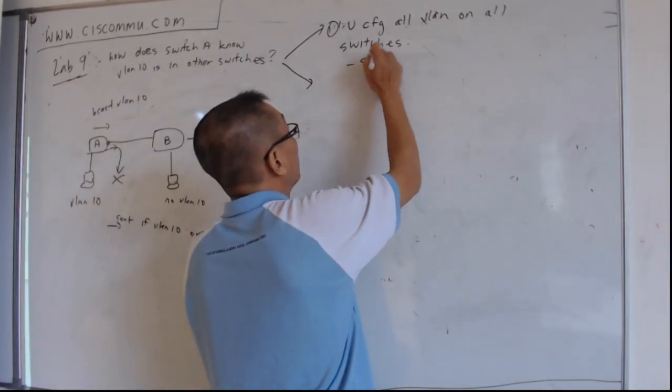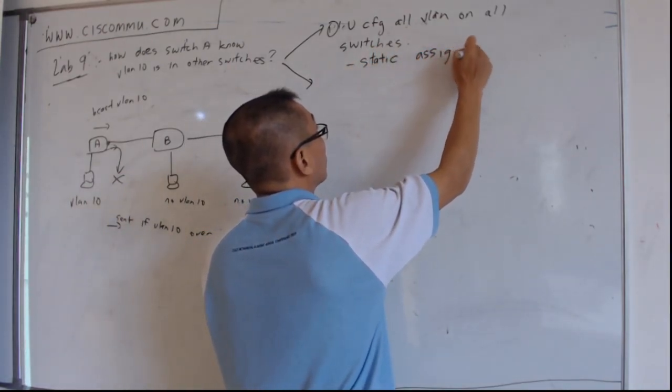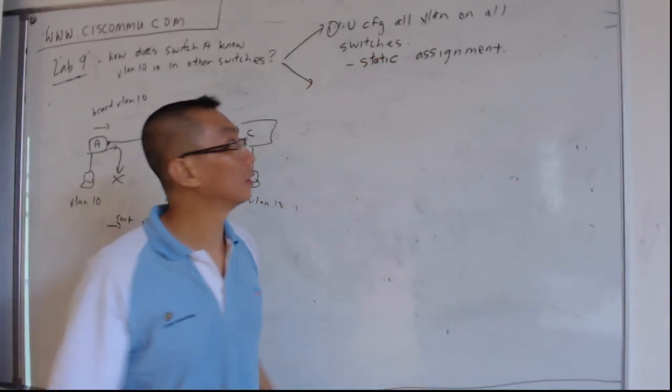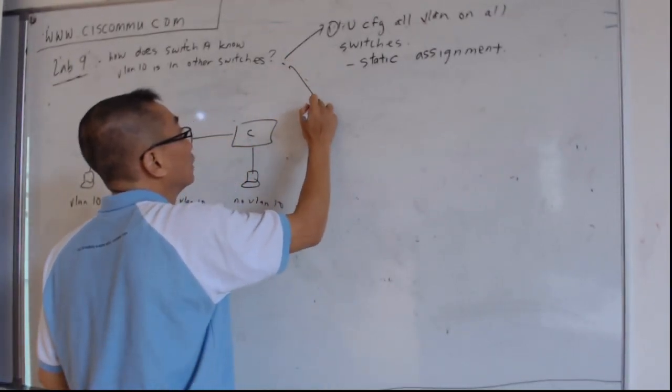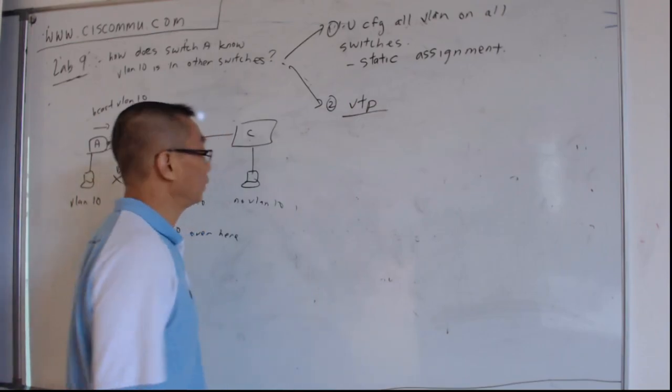Whatever VLAN you have, you configure it on all the switches. The second way you do it is use VTP. Which means that...